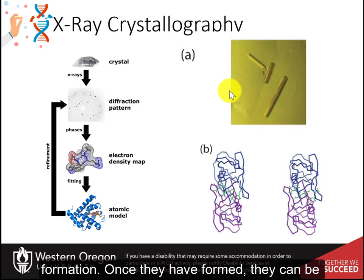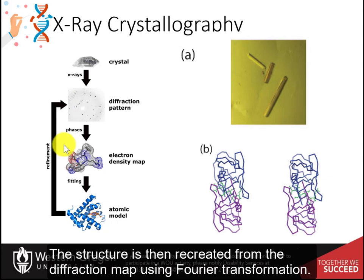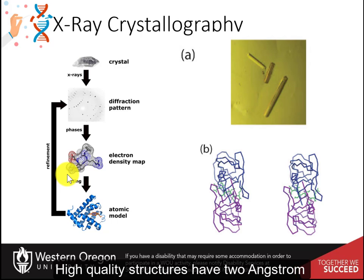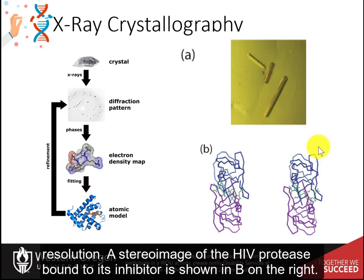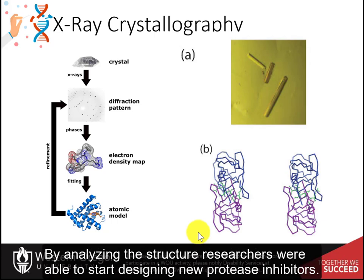Once they have formed, they can be bombarded with x-rays and the diffraction pattern recorded. The structure is then recreated from the diffraction map using Fourier transformation. High-quality structures have two-angstrom resolution. A stereo image of the HIV protease bound to its inhibitor is shown in B on the right. This structure was solved by x-ray crystallography. By analyzing the structure, researchers were able to start designing new protease inhibitors.